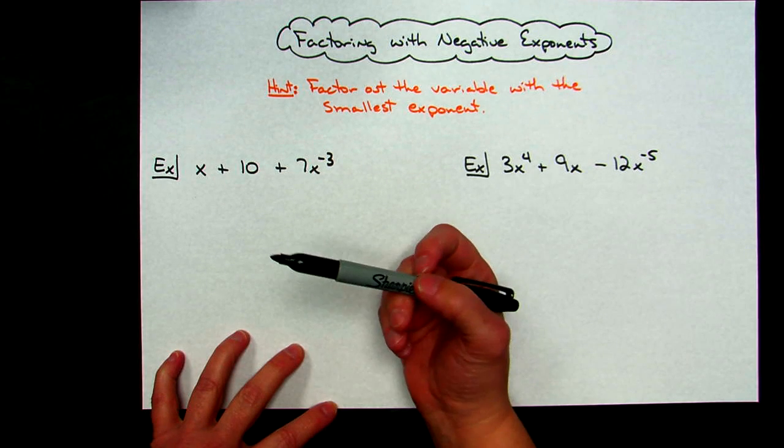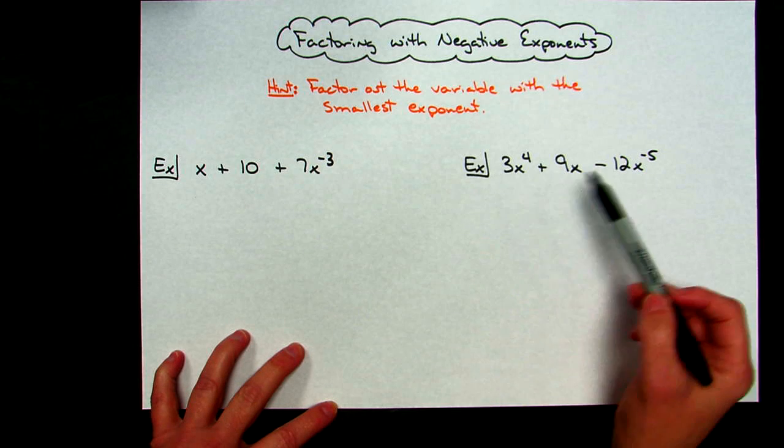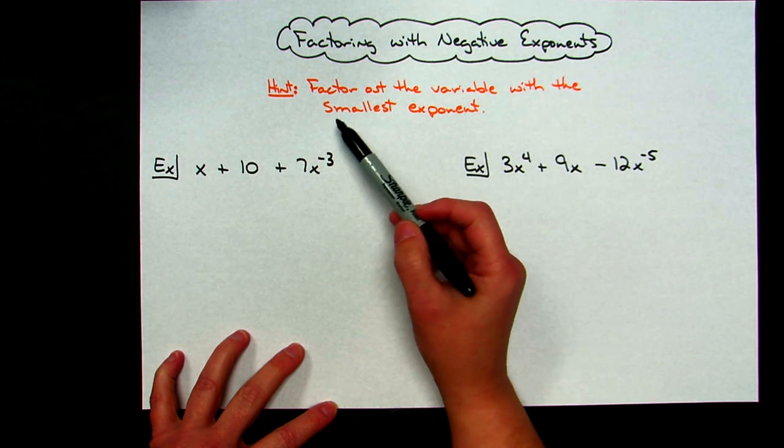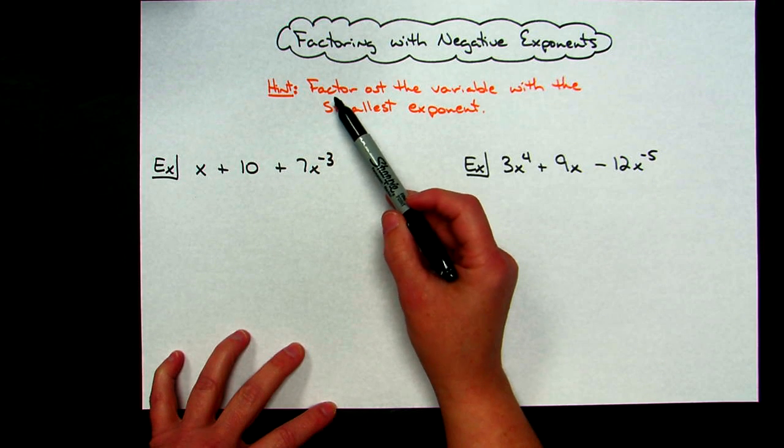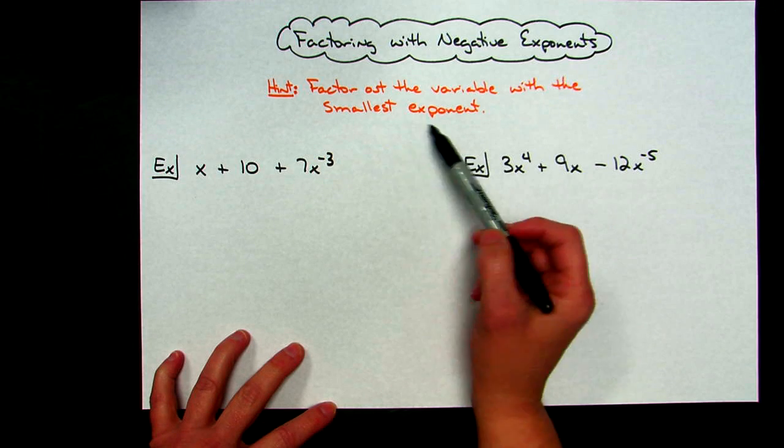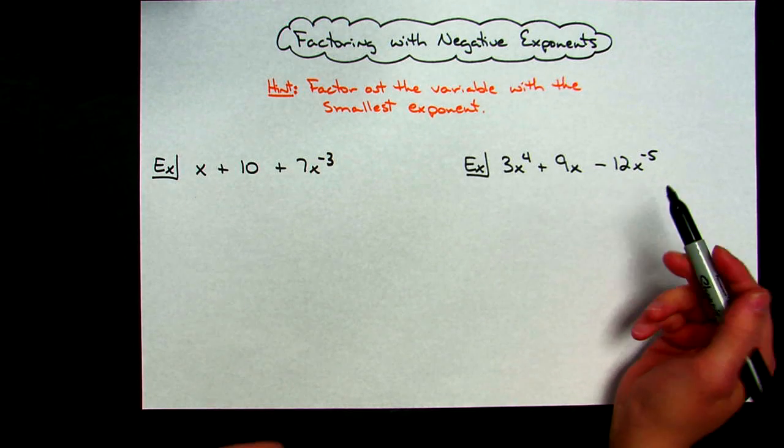But just to reemphasize, if you've definitely got some negative exponents floating around in there, then you just have to make sure you're thinking that okay, I've got to factor out the variable with the smallest exponent, in which case it's probably going to be those negative exponents.